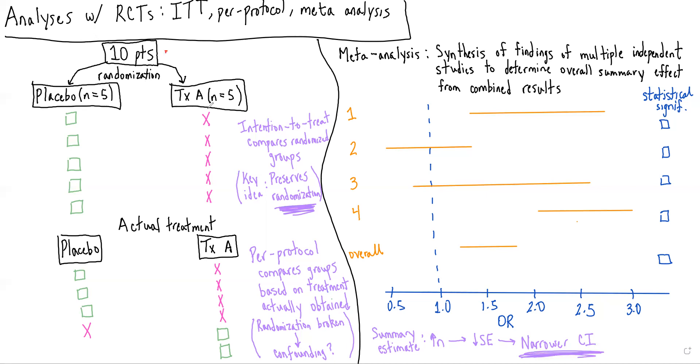If during the course of the study, actually one patient randomized to treatment A never actually ends up getting the treatment, and two patients randomized to placebo actually end up crossing over and receiving treatment A, we would see if we actually charted out actual treatment status that there are these four individuals who got placebo and these six individuals who got treatment A.